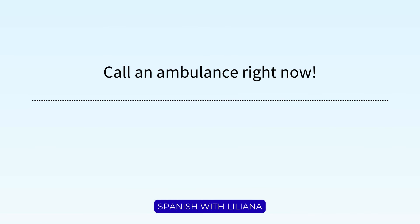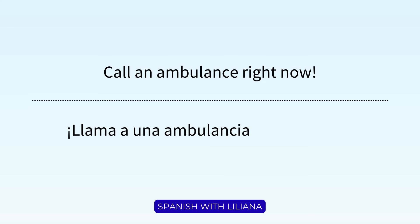How would you say 'call an ambulance right now'? 'Call' is 'llama' — it's an order. An ambulance is 'a una ambulancia.' We see here the personal 'a' in Spanish, which we don't usually use in English. Certain verbs like 'llamar' use that personal 'a' because you're calling somebody else. 'Right now' is 'ahora mismo.' So: 'Llama a una ambulancia ahora mismo.'